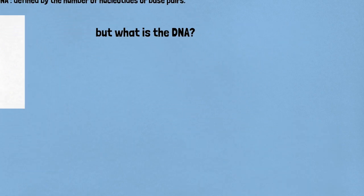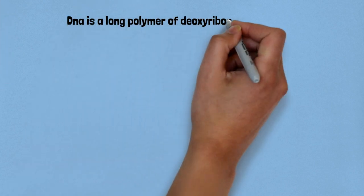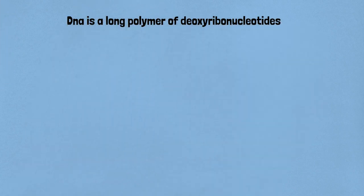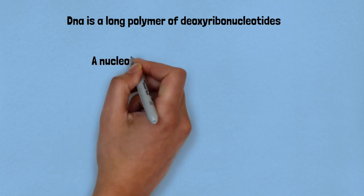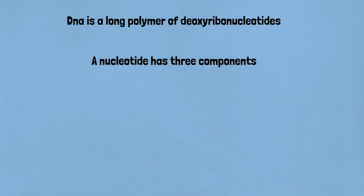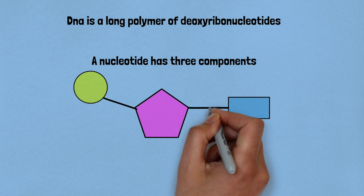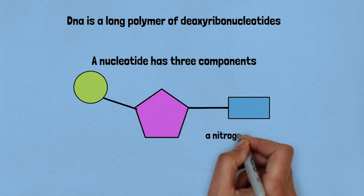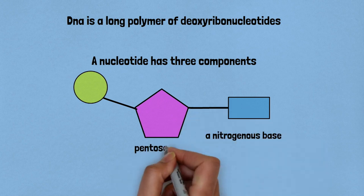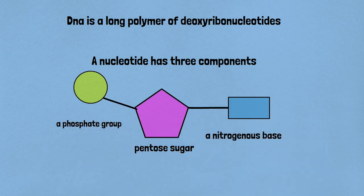DNA is a long polymer of deoxyribonucleotides and a nucleotide has three components: a nitrogenous base, a pentose sugar, and a phosphate group.